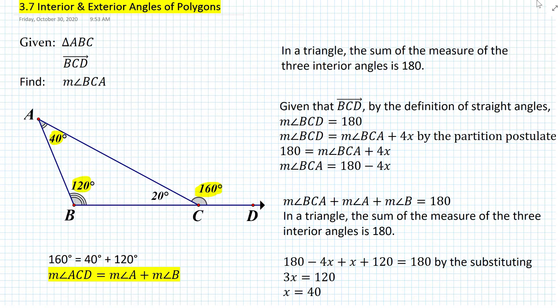So the question is, is it always true that the exterior angle of a triangle is equal to the sum of its remote interior angles? Well, here we have a hypothesis based on some example in terms of numerical values. Let's test the hypothesis by proving it and seeing if this is always true or not.